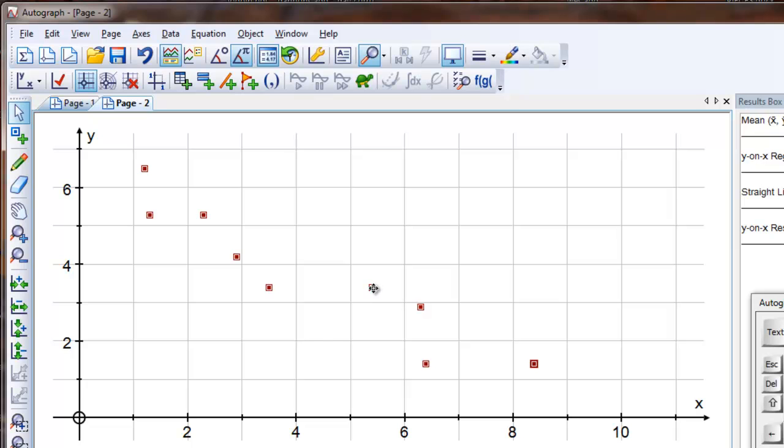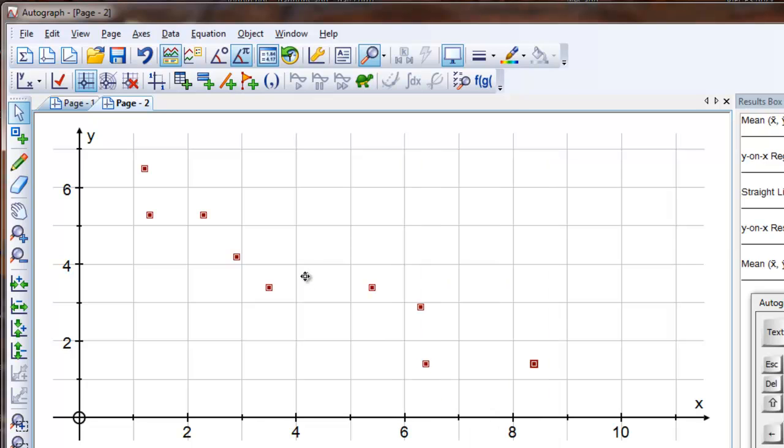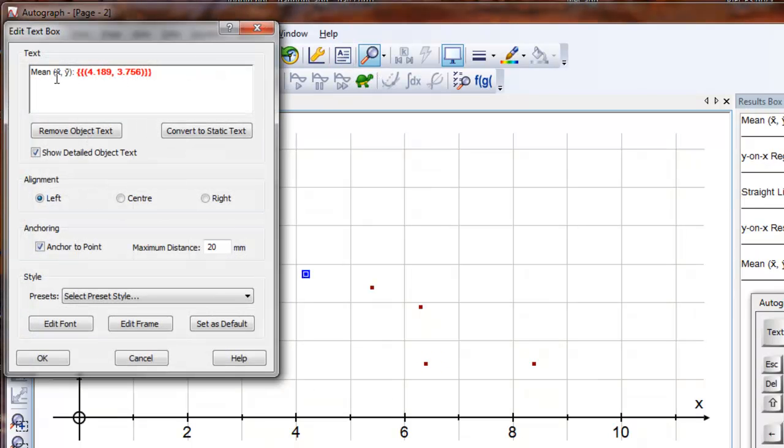So now they're a single object, and the right click options are, for example, to put on the mean. There it goes, and you can select the mean, and go to the text box, which will show the mean using the notation X bar, Y bar, which is nice.